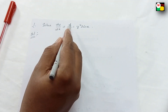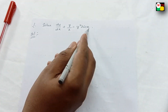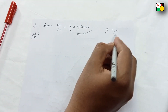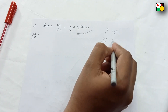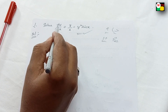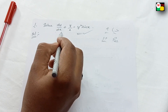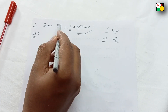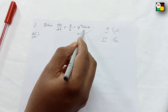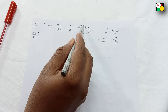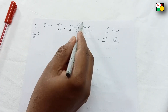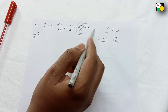Solve: dy/dx plus y/x equal to y squared sin x. This is first of all — part 9 has a linear differential equation, or part 10 has a Bernoulli's equation. Now we have to observe the question. We have dy/dx plus Py — dy/dx is Py — so Py is equal to Q into y power n.